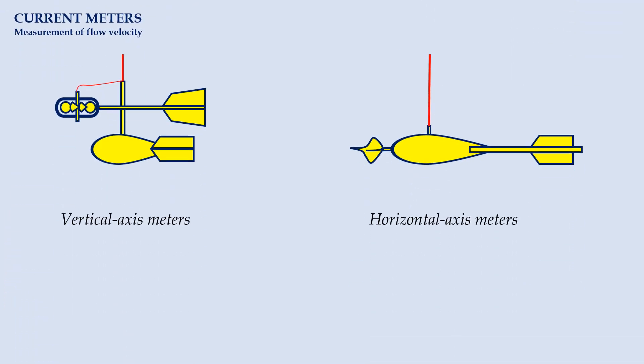To measure the stream flow, we first need to measure the velocity of stream. The velocity is usually measured at specific points in the flow cross section. This can be achieved by using a current meter. There are two main types of current meters, namely vertical axis and horizontal axis meters.